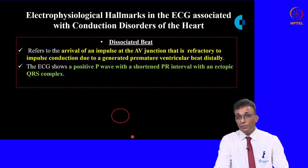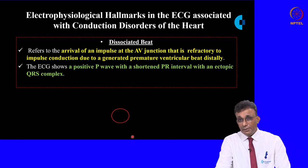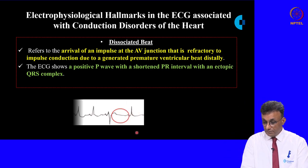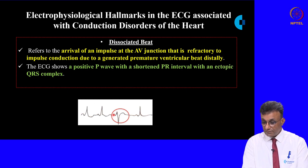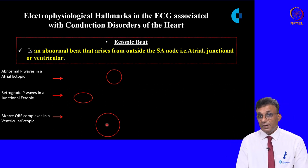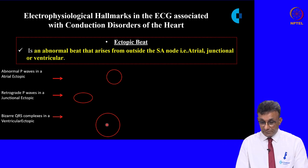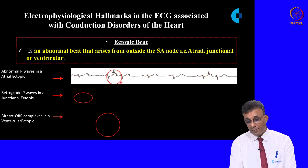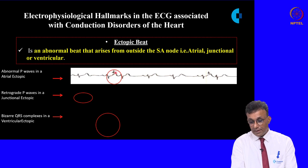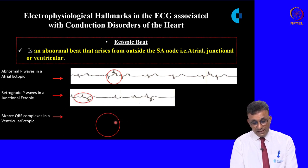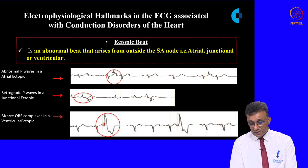A dissociated beat refers to a block in conduction of impulses at the AV node due to a ventricular premature beat generated distally. The ECG shows a positive P wave with a shortened PR interval, as seen in this tracing. An ectopic beat is an abnormal beat arising outside the SA node — it can be atrial, junctional, or ventricular. The atrial ectopic shows abnormal P waves; the junctional ectopic has retrograde P waves; and the ventricular ectopic has bizarre QRS complexes.